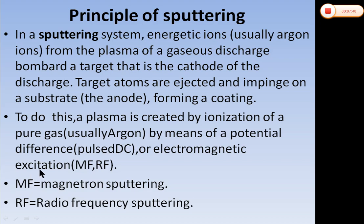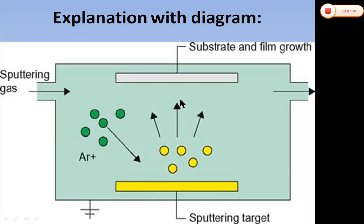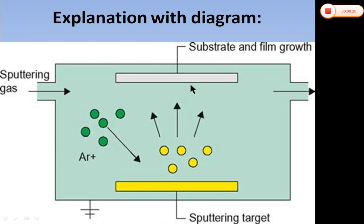MF is magnetron sputtering and RF is radio frequency sputtering. The sputtering gas, usually argon, is ionized to form Ar+ ions. These ions strike the target material — the sputtering target — causing its atoms to be ejected. The ejected atoms travel toward the substrate and grow into a thin film deposited on the substrate. This is the simple mechanism of sputtering.